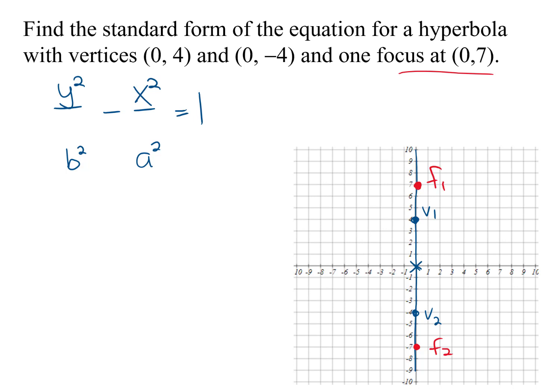So b is how far away from the center the vertex is in that direction, and that's 4 away. So b equals 4, so b-squared will be 16.